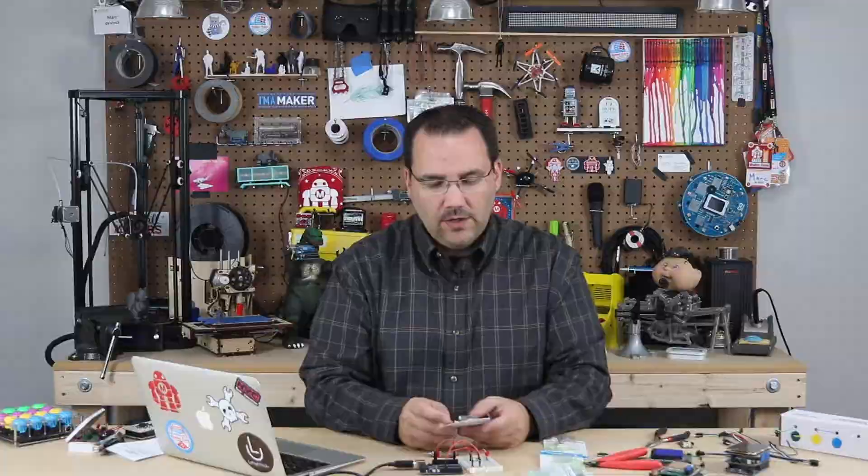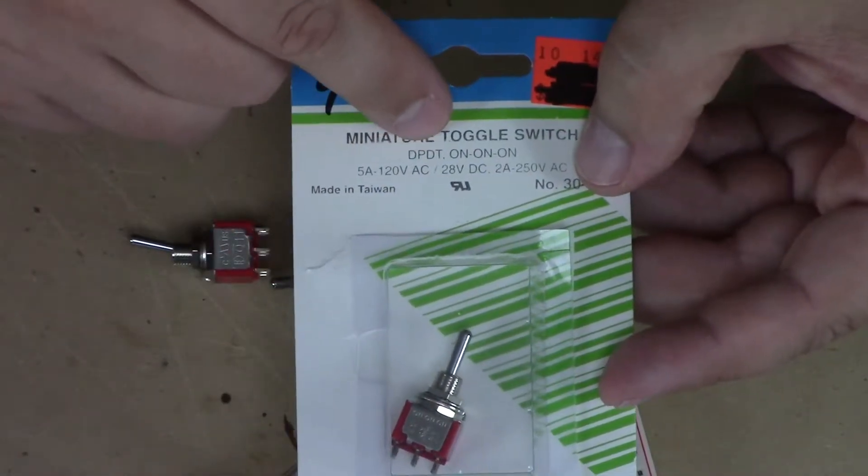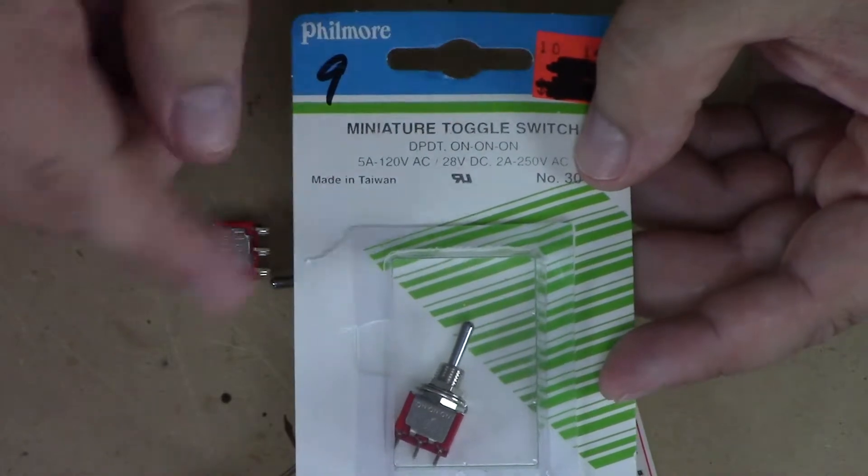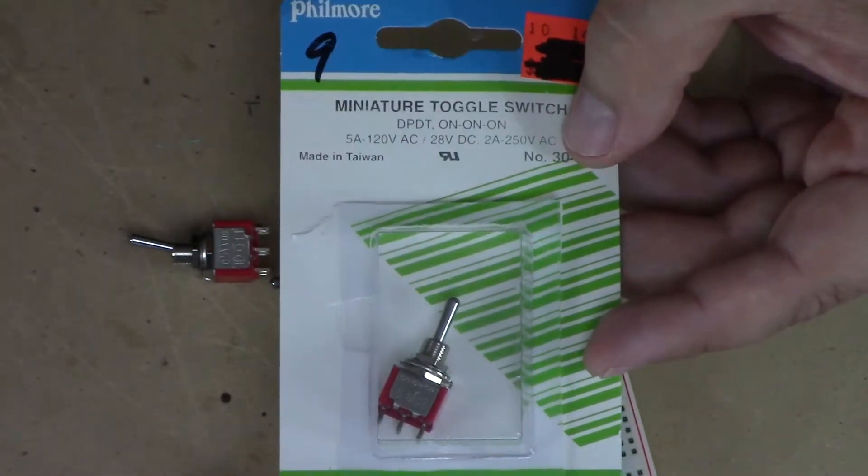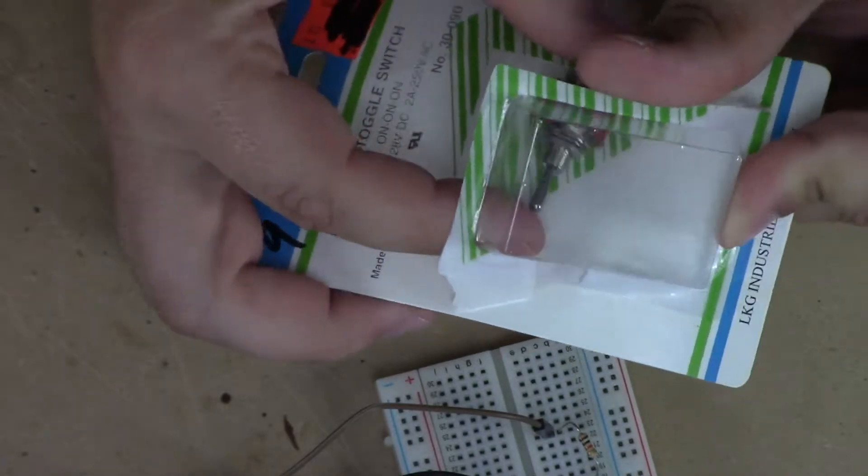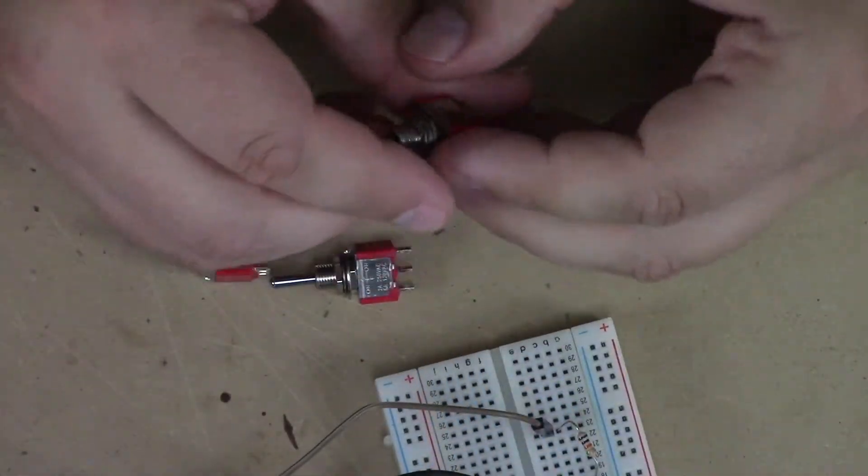So there's lots of different kinds of switches out there. I have a few examples here, and what you need to look for is the fact that it says DPDT, that's a dual pole, dual throw, so I know that switch is going to go left, center, and right, and I know that it's going to have six terminals on the bottom. And this is an on, on, on.